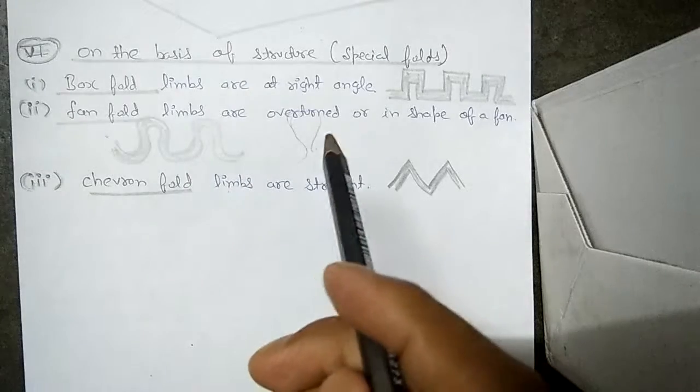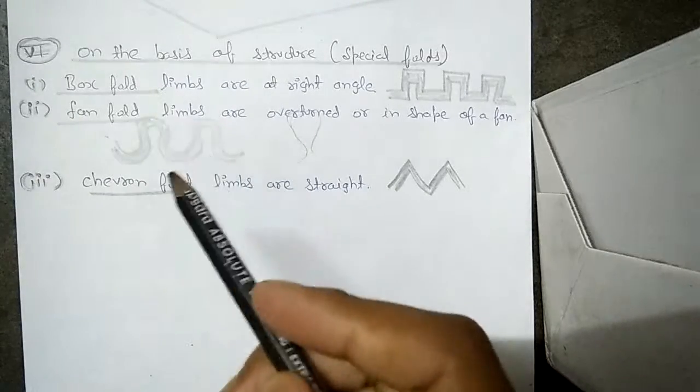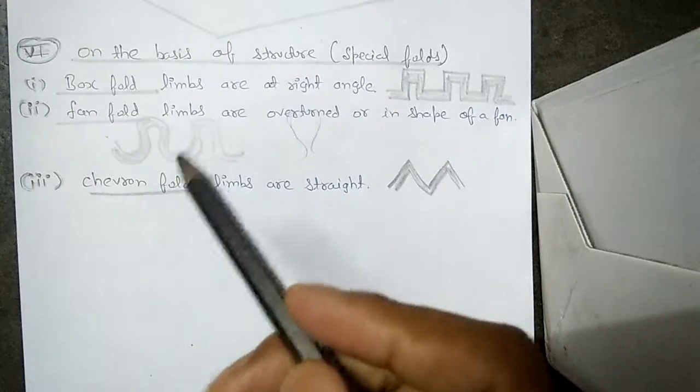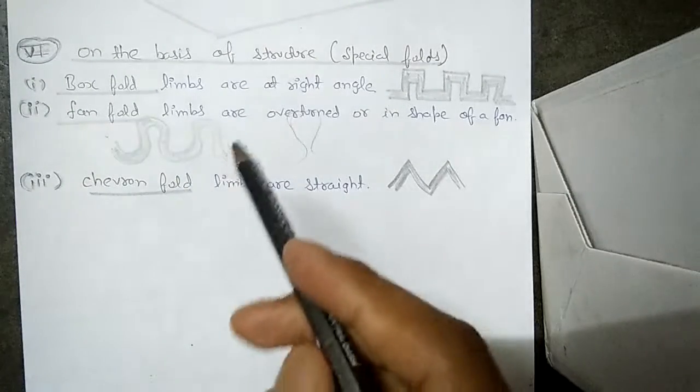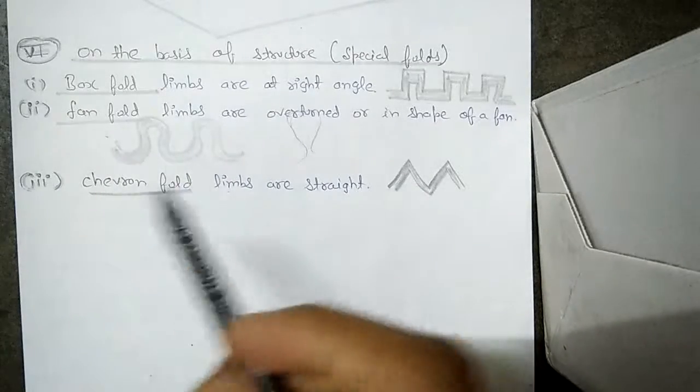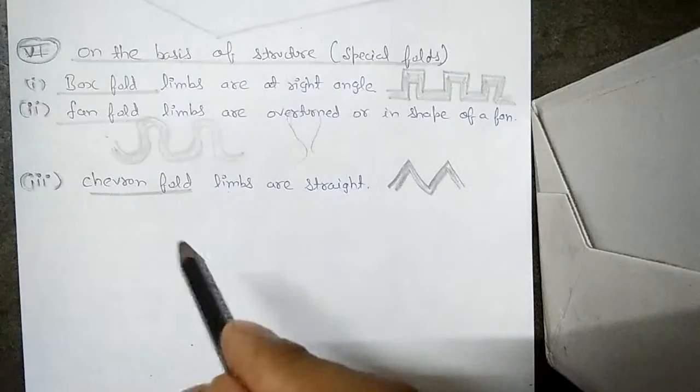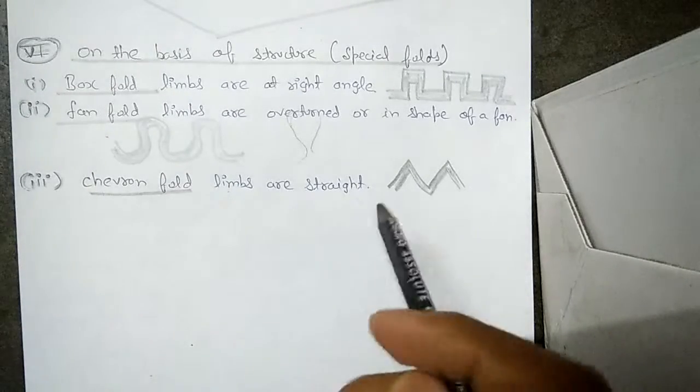Second is fan fold, where limbs are overturned or in the shape of a fan. The folds that are having limbs which are basically overturned, they are turned more than the normal or they are shaped like a fan. Such folds are called fan fold. The last one is chevron fold. Limbs are straight.